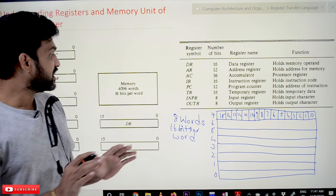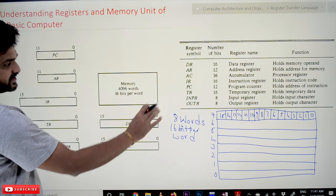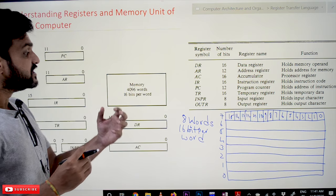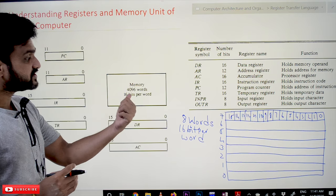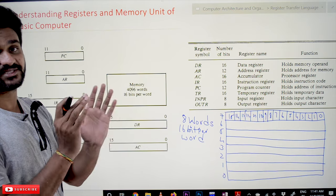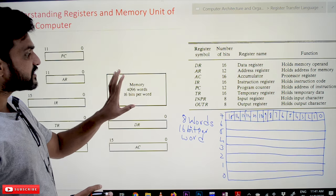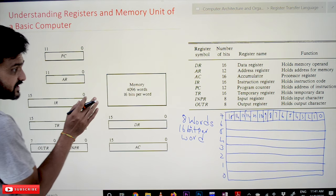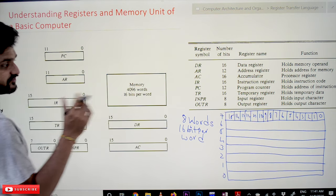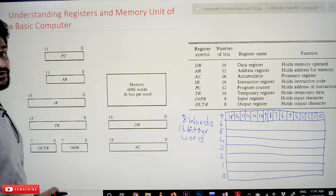Now, coming to the memory unit — what is this memory unit? We have already discussed that the memory unit is what we call RAM, random access memory. It is not a hard disk; it is RAM. The features of this RAM: it consists of 4096 words.